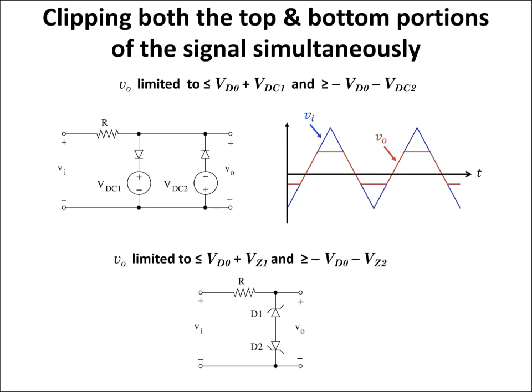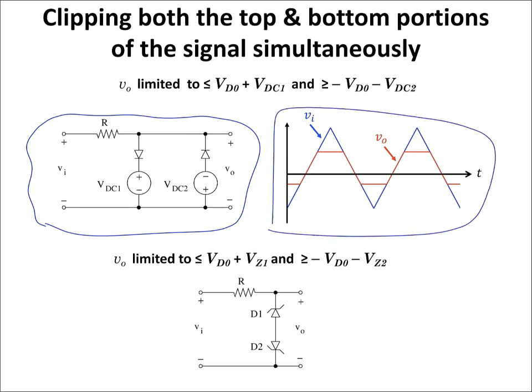Finally, it is possible to clip both the top and bottom portions of the signal simultaneously. This circuit configuration allows me to cut the input signal from both the bottom and top portions, and by adjusting the values of DC voltage sources VDC1 and VDC2 I can adjust these threshold values. Vout is limited to less than VD0 + VDC1 or greater than −VD0 − VDC2. We can use Zener diodes to simplify this — Vout is then limited to less than VD0 + VZ1 or greater than −VD0 − VZ2.